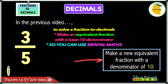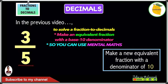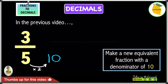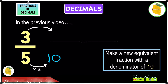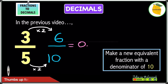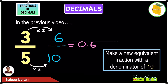We have to make a new equivalent fraction with the denominator of 10. To do that we have to change the 5 into a 10, and the number we multiply 5 by to get 10 is 2, because 5 times 2 gives you 10. Remember, whatever you do to the denominator you do to the numerator — so multiply the 3 also by 2. 3 times 2 gives you 6, so we get 6 over 10, which as a decimal is 0.6. So 3 over 5 converted into a decimal is 0.6.